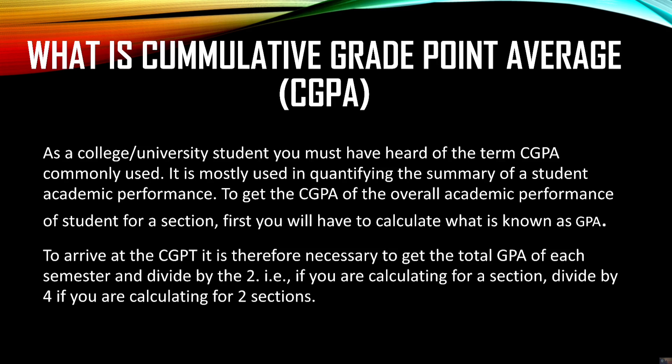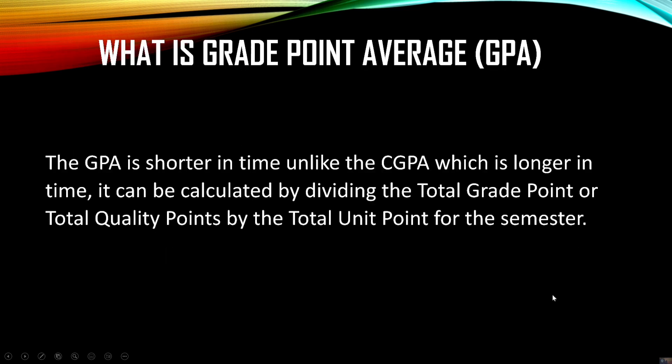Your GPA is a summation of all your courses. We have what we call credit units — we have three-unit courses, two-unit courses, four-unit courses, and the likes. The summation of the weighted grade points for all those courses is divided by the total credit units. Let's move to the next phase to better understand what I'm trying to explain.